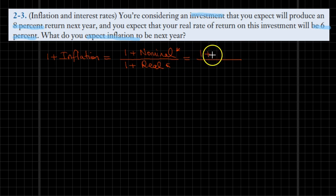So 1 plus the nominal interest rate of 8% and then divided by 1 plus the real interest rate of 6%. Now let's solve this equation together.